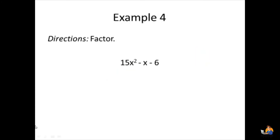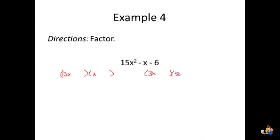Let's look at another example where the leading coefficient is not a prime number. The coefficient is 15, so we could have 15x and x, or we could try 3x and 5x instead. We'll try 3x and 5x because 3 and 5 are closer together than 15 and 1.